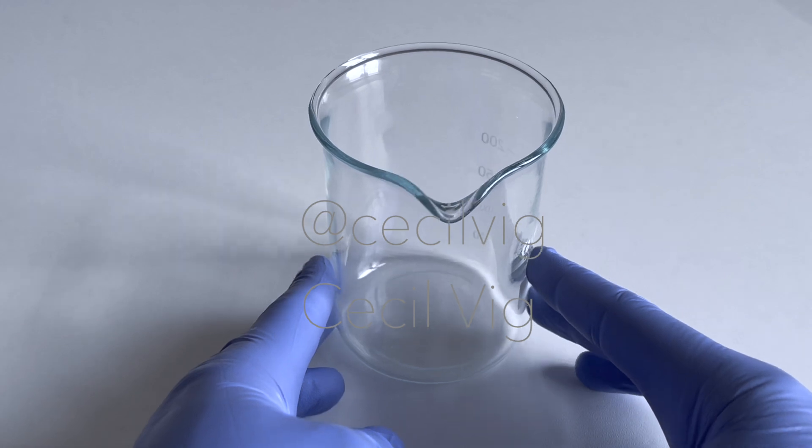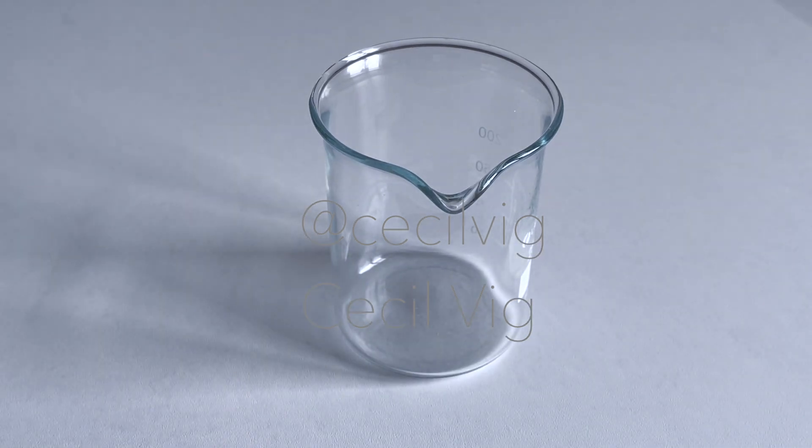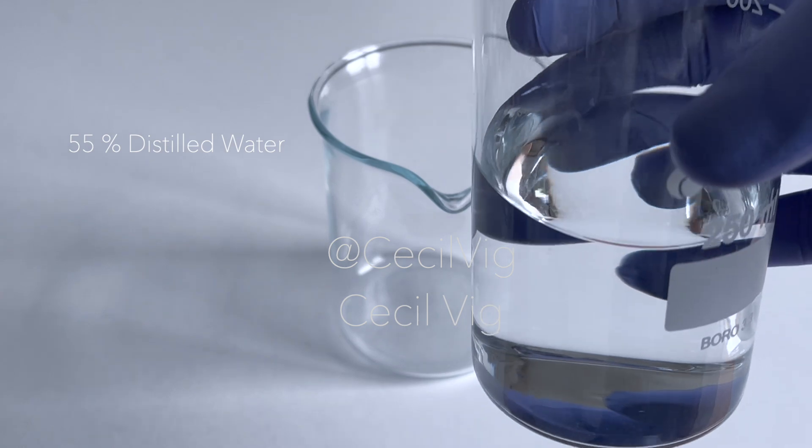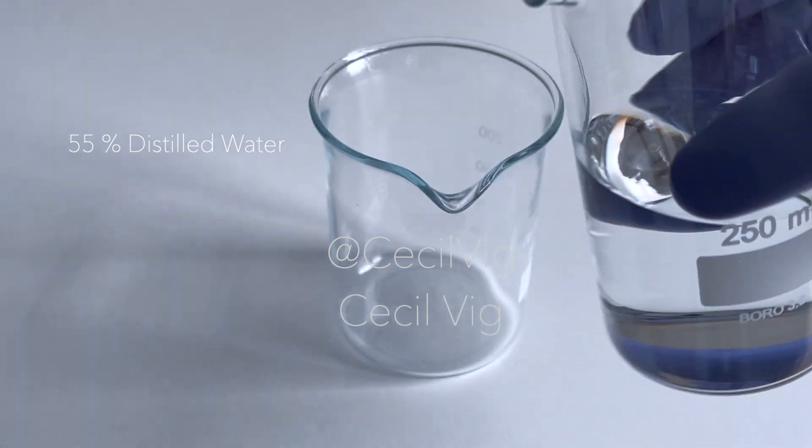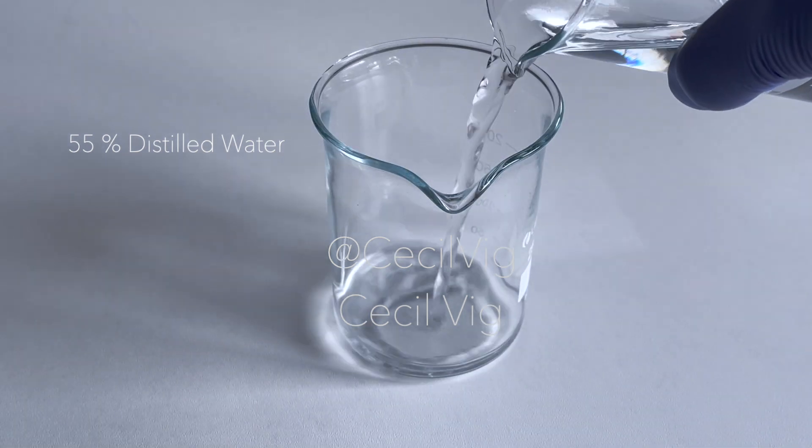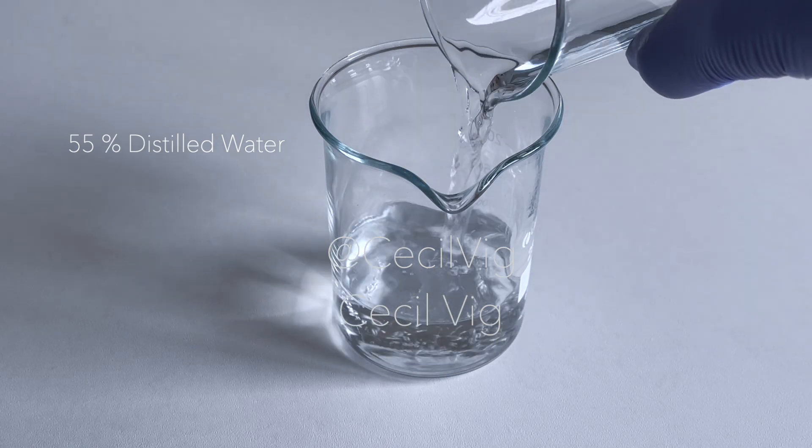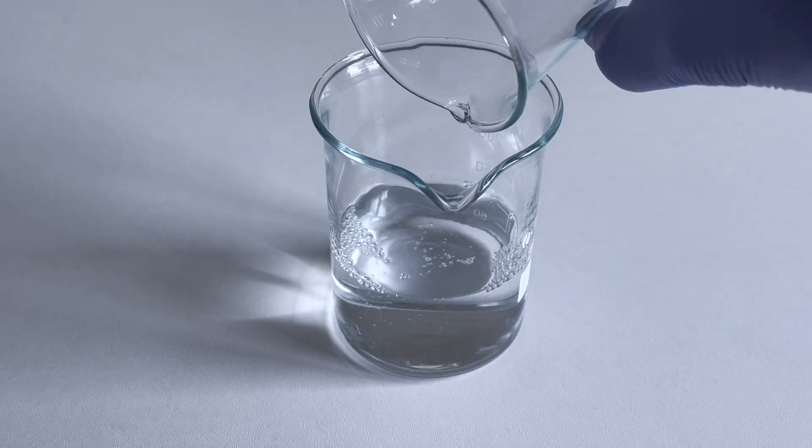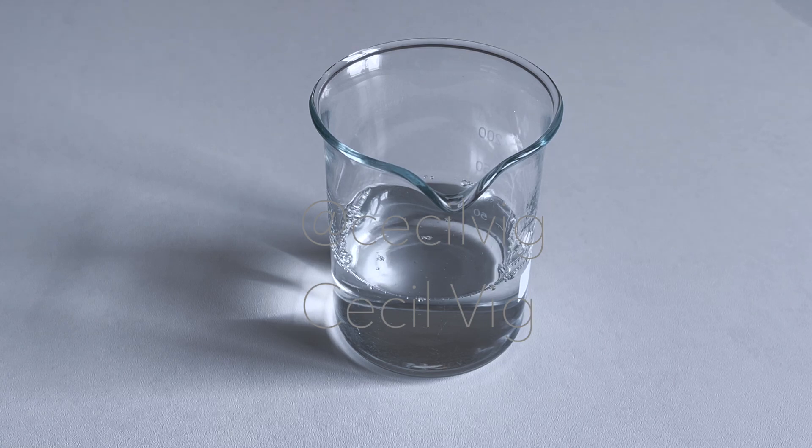We start with the water phase. To prepare the water phase, we need a glass beaker or a heat-proof container. I pour the distilled water into the beaker. Water has been described as the universal solvent in cosmetics and is often the first ingredient on the ingredient list.